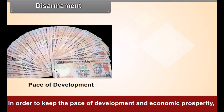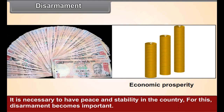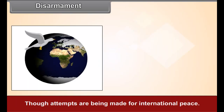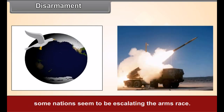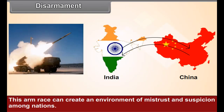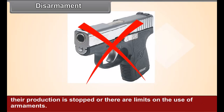Disarmament: In order to keep the pace of development and economic prosperity, it is necessary to have peace and stability in the country. For this, disarmament becomes important. Though attempts are being made for international peace, some nations seem to be escalating the arms race. This arms race can create an environment of mistrust and suspicion among nations. Disarmament refers to the idea that international peace can be established if armaments are destroyed, their production is stopped, or there are limits on the use of armaments. In 1959, the UN declared universal and comprehensive disarmament as its objective.